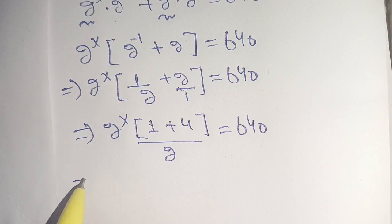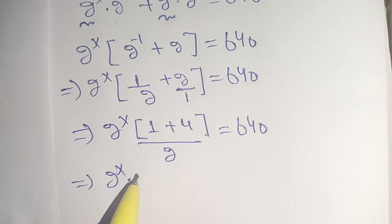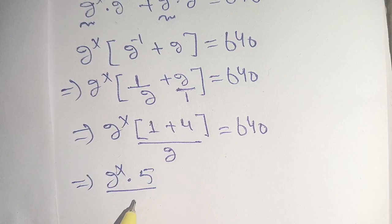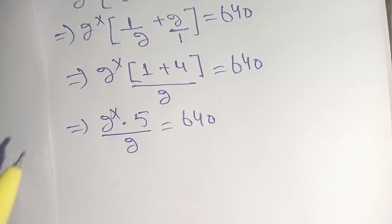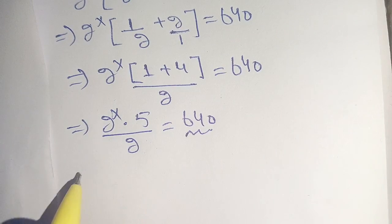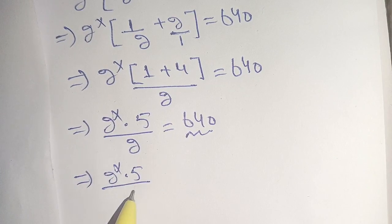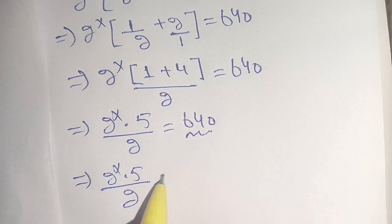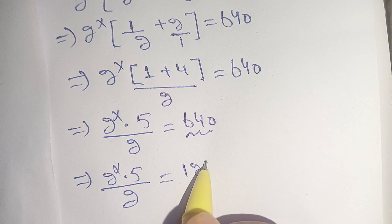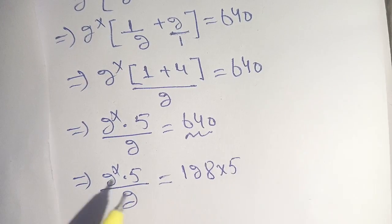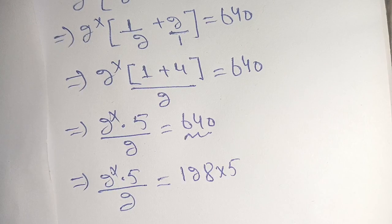Now we have 2 power x times (1 plus 4), which becomes 5, divided by 2, is equal to 640. In the next step we break down 640: 2 power x times 5 divided by 2 is equal to 640, and 640 can be written as 128 times 5.